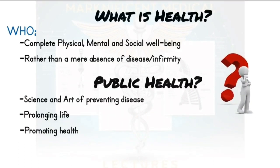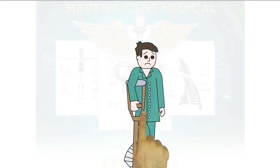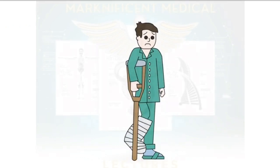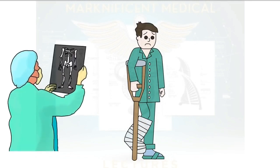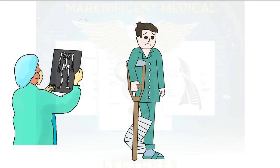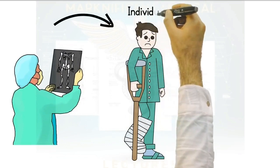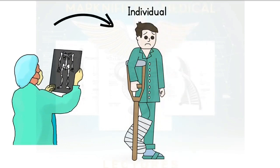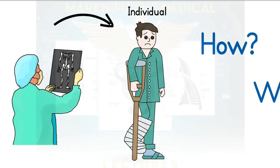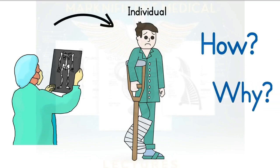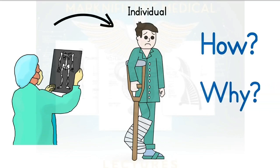Let's take a look at an example. Let's say someone has an accident and has a broken leg. A clinician's main focus is the immediate health problem — fixing the fractured leg. Clinicians focus on the individual.